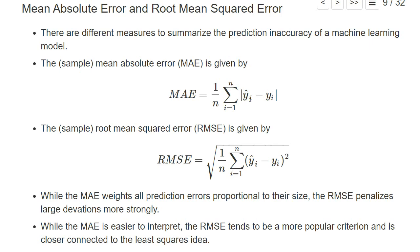It doesn't really matter whether we estimate it too high so we have a positive difference, or whether we predicted a too low value where we have a negative difference.